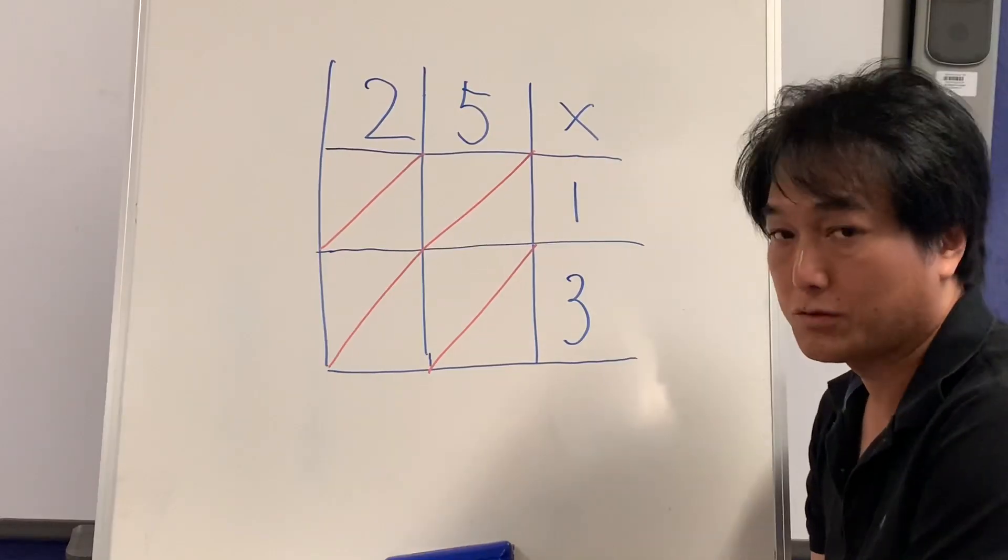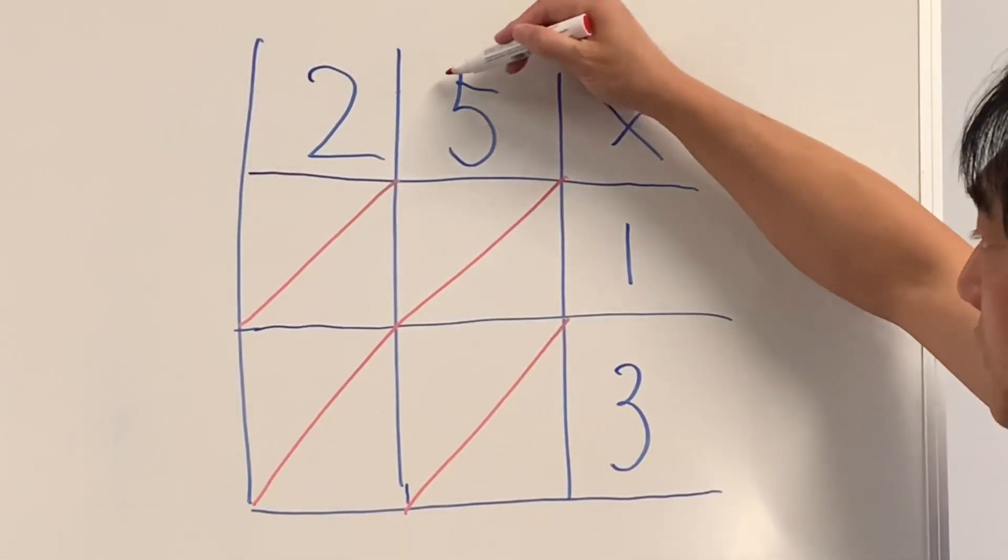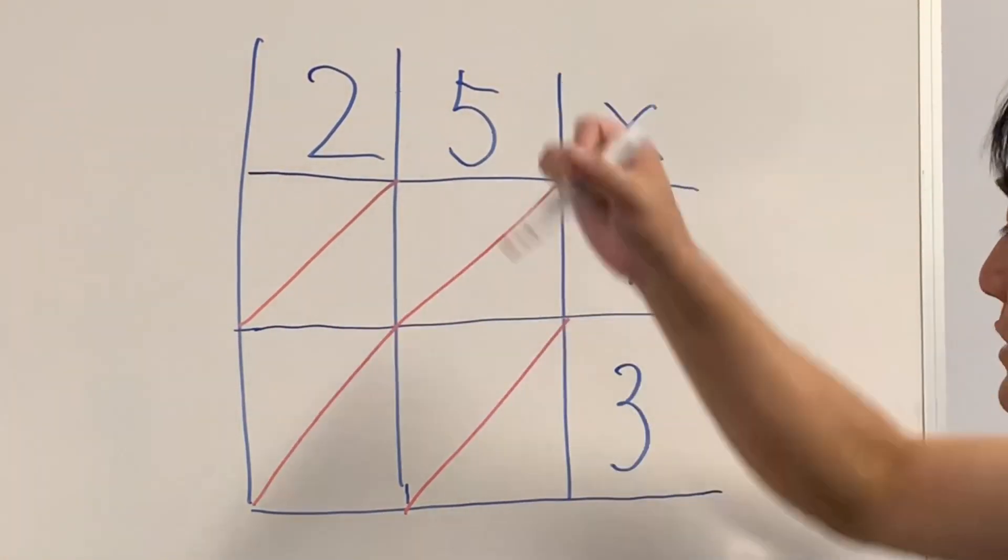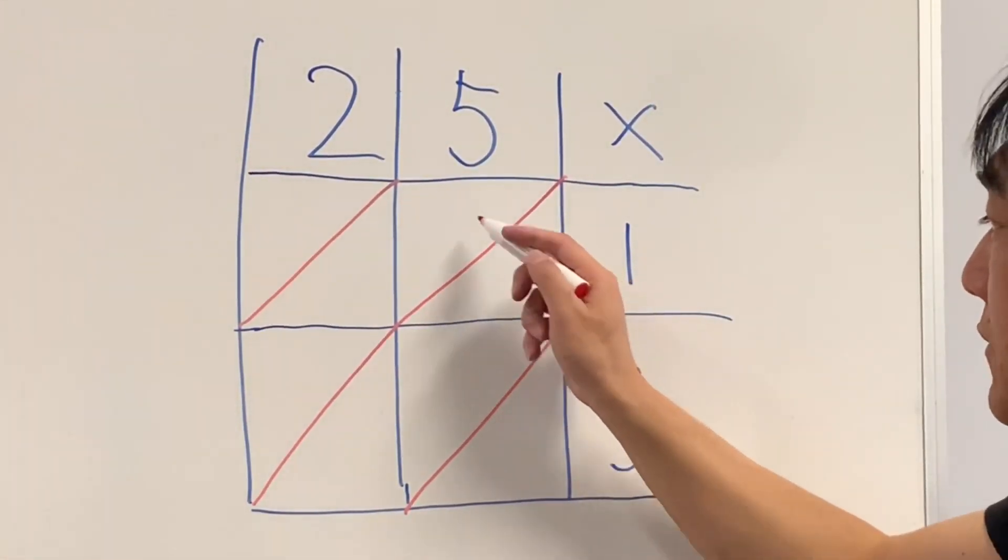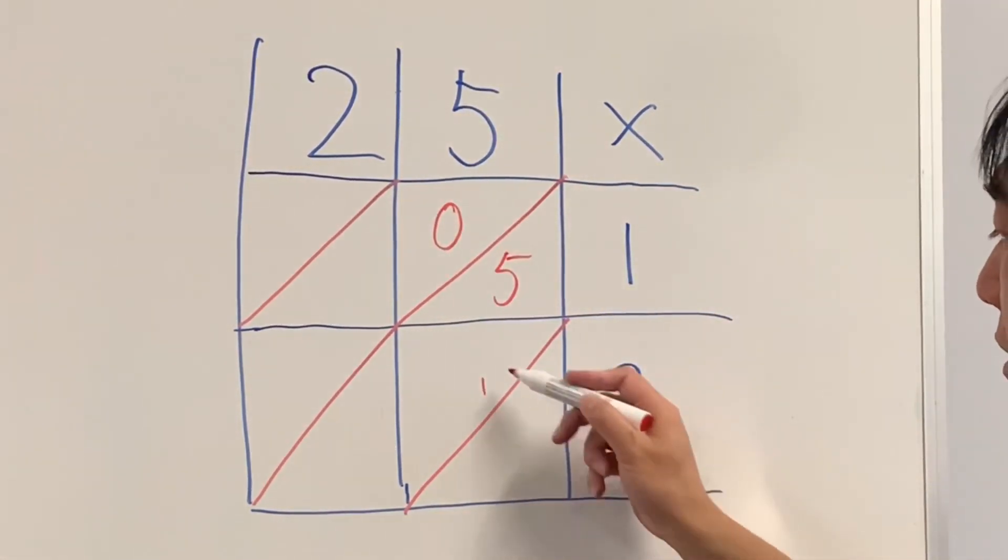Once you're used to it, it's going to be a lot easier. What you do is we do 5 times 1 in this box. 5 times 1 is 5, so instead of writing 5 we'll write 05. 5 times 3 is 15.